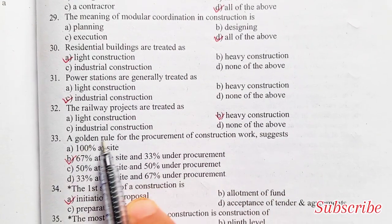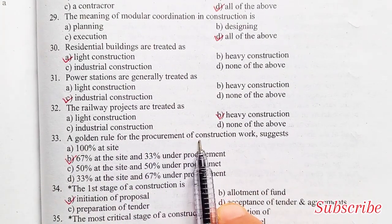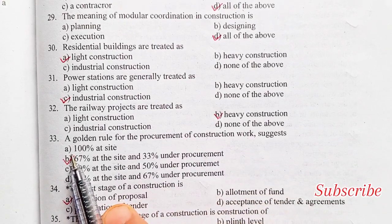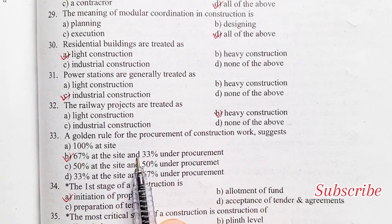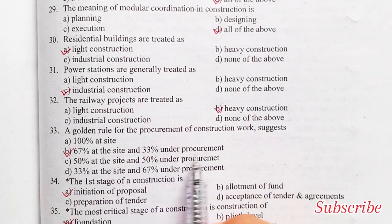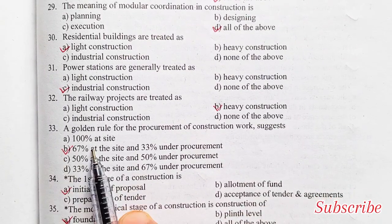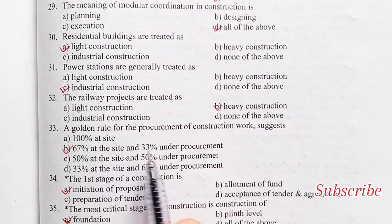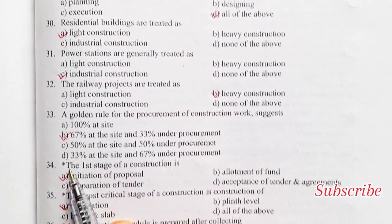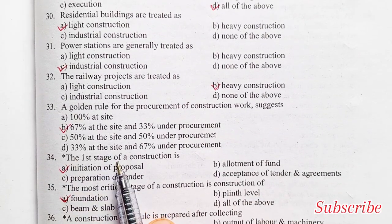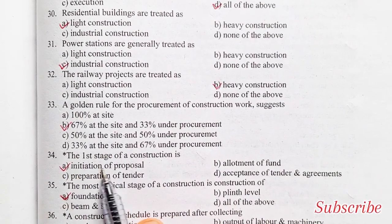The golden rule for procurement of construction work suggests: 100% at site, or 67% at the site and 33% under procurement. Option B is the right answer — 67% at the site and 33% under procurement.